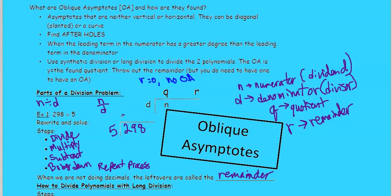So 5 goes into 2, 0 times, 0 times 5 is 0. 2 minus 0 is 2. Bring down the 9. 5 goes into 29, 5 times without going over. 5 times 5 is 25. Subtract those. You get 4, and then bring down the 8.